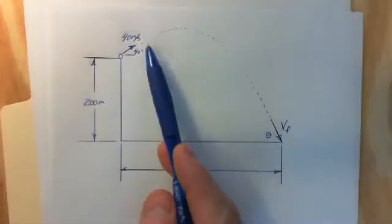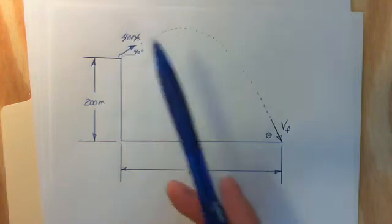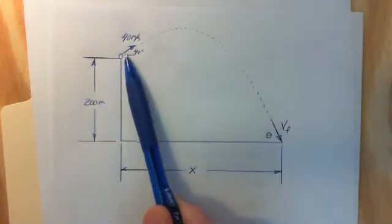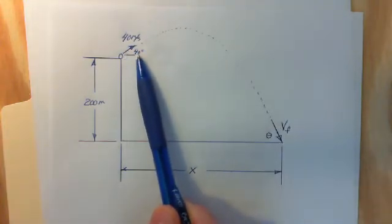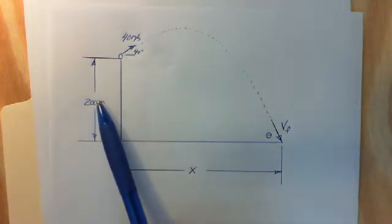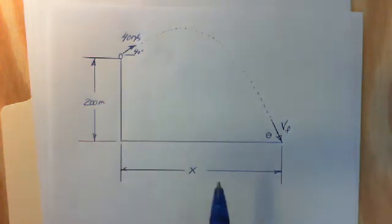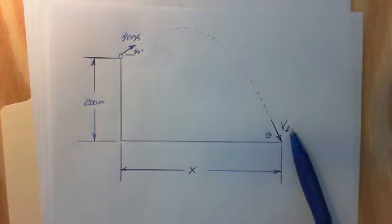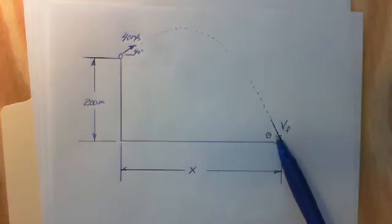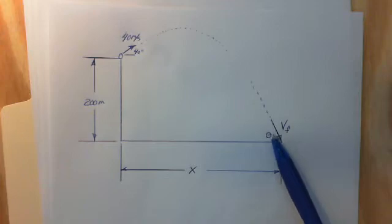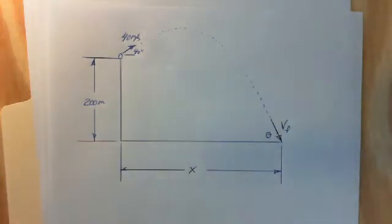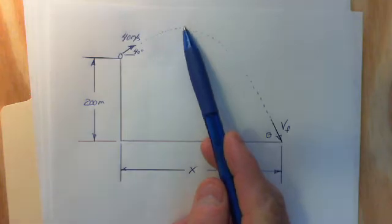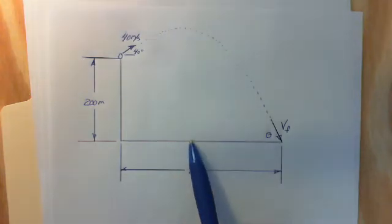What I have here is an object with an initial velocity of 40 meters per second. The angle coming off the horizontal is going to be 40 degrees, and it's coming off a cliff 200 meters tall. We want to find out what the horizontal displacement is, what the final velocity is at impact, what the angle of the object is when it hits at impact, and also what the maximum height of this object is going to be with respect to the valley floor.